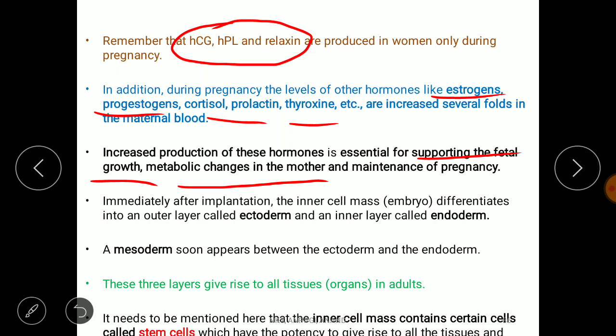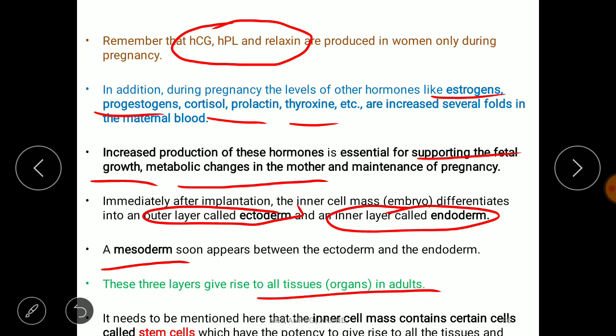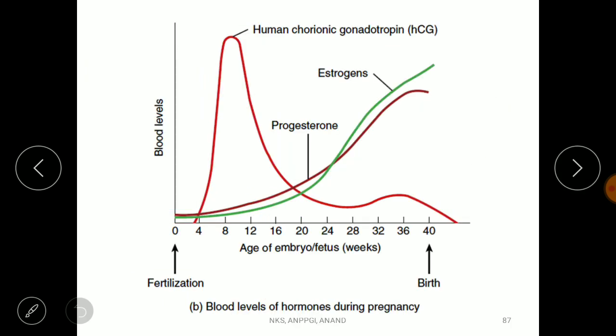During development, the inner cell mass differentiates into three germinal layers: the outer ectoderm, the inner endoderm, and the mesoderm in between. These three germinal layers are responsible for the genesis of different types of tissues and organs. The inner cell mass contains many stem cells, which have the capacity to divide and differentiate into any kind of organ or tissue.